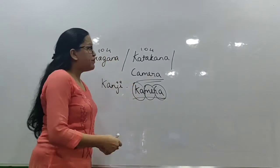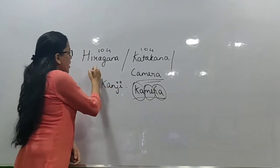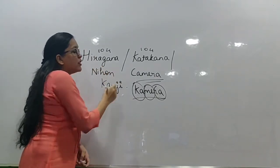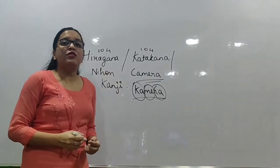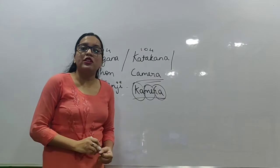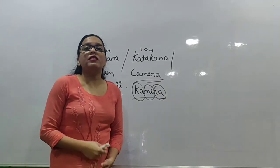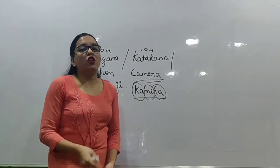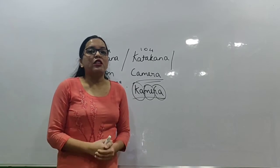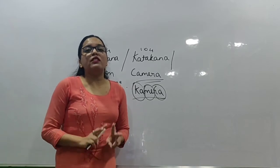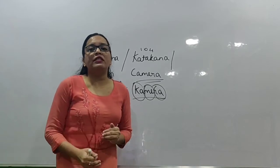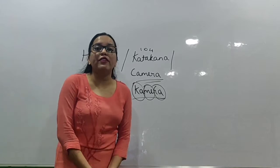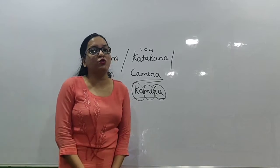Words that exist in the Japanese dictionary are written in Hiragana, not in Katakana. For example, 'Nihon' is a word in their own dictionary, so it will be written in Hiragana, not translated into Katakana. This is the basic difference between Katakana and Hiragana and why we need these two scripts.